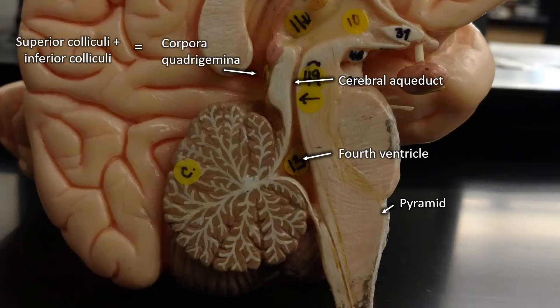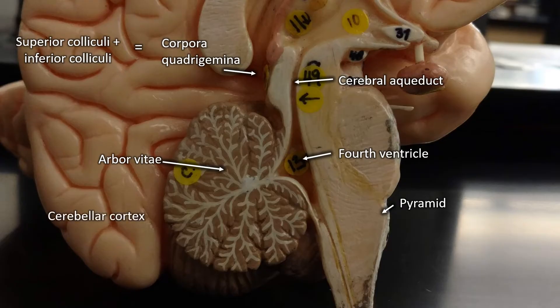On the front of the medulla oblongata, that raised area is the pyramid. The white matter contained within the cerebellum is the arbor vitae, meaning 'tree of life,' and outside of that white matter, all of the gray matter on the outside is the cerebellar cortex.